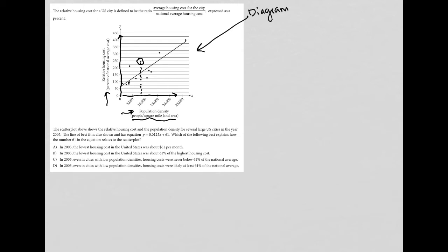This dot is telling me that when the population is about 8,000, then the relative housing cost is 250% of national average. So at that population density, the relative housing cost is 250%. Now I go back to reading.